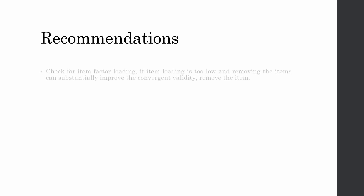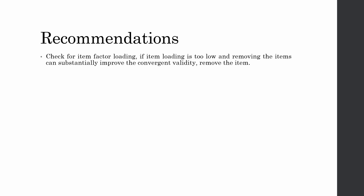Now, what are the recommendations for solving the problem? Number one: check for item loading. If the loading is too low and removing the item can substantially improve convergent validity, then remove it. If removing the item does not improve convergent validity, do not remove it. Normally we remove items with loadings below 0.7 or 0.6, but this may not improve convergent validity sufficiently if the AVE is already at 0.5 or 0.6, so removal may not be necessary.